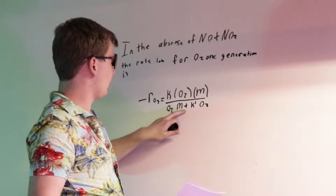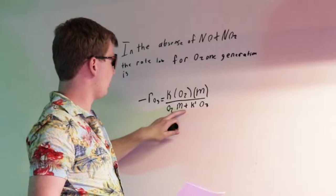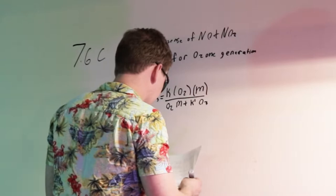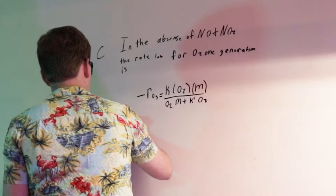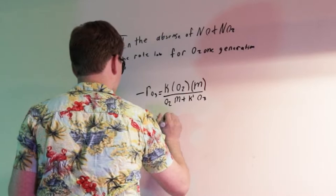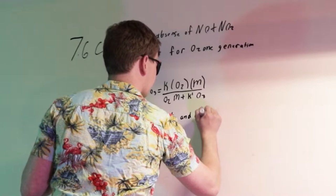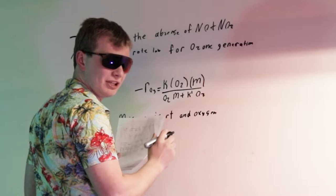Looking at this equation we can tell that, or we know from nomenclature, that M is an inert and oxygen is the active species.